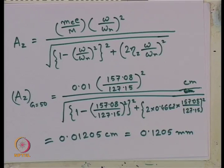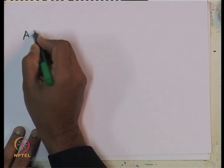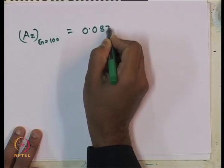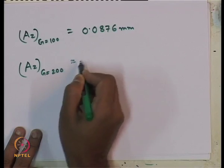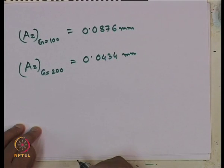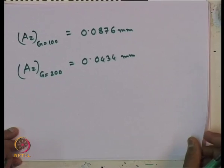For the first soil type (G = 50), a_z comes out to 0.0125 centimeter, which is 0.1205 millimeter. As mentioned earlier, if the load in constant force type and rotating mass type are the same, then at the same operating frequency the displacement amplitude will also be the same. So for G = 100, a_z = 0.0876 millimeter, and for G = 200, a_z = 0.0434 millimeter. That completes the displacement amplitude calculation for vertical mode of vibration.